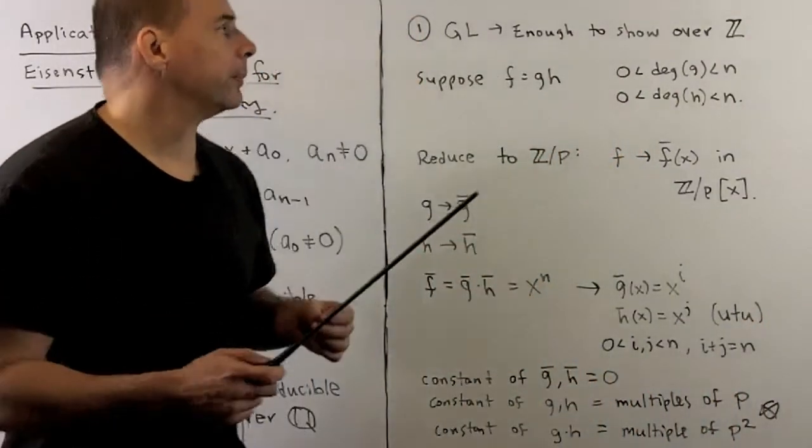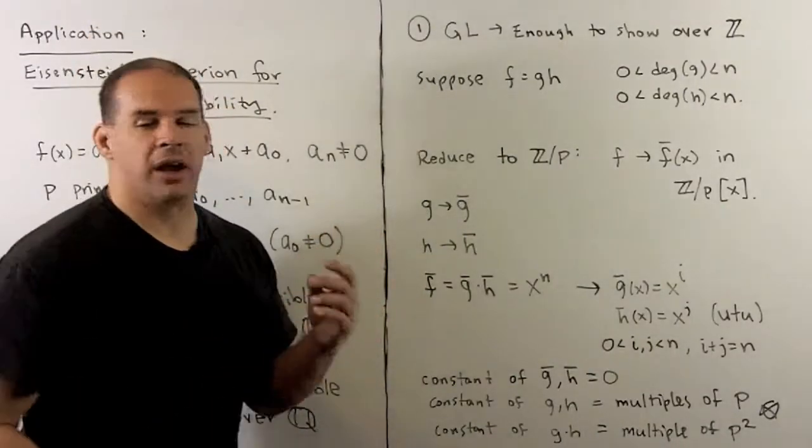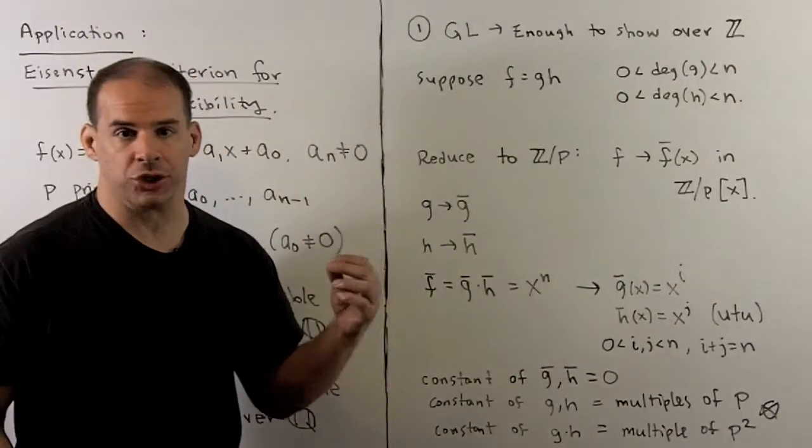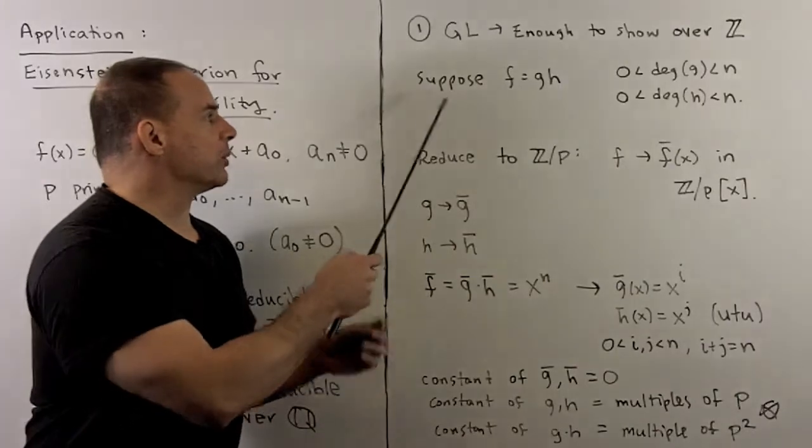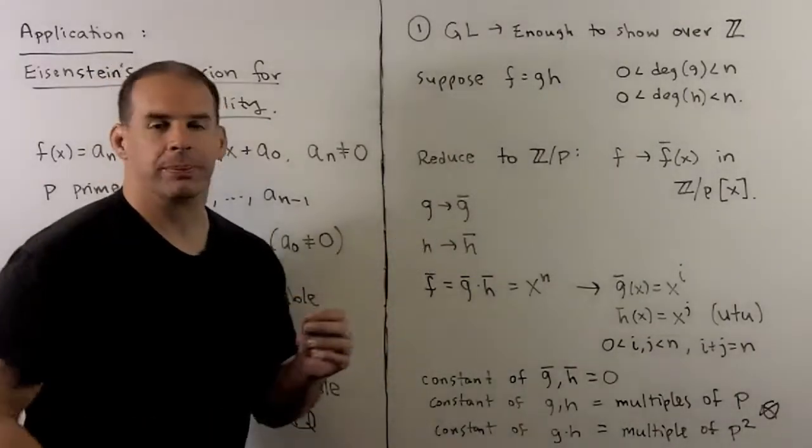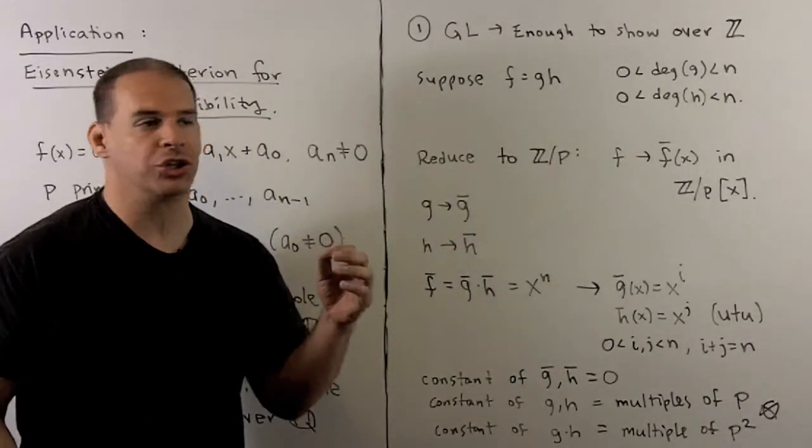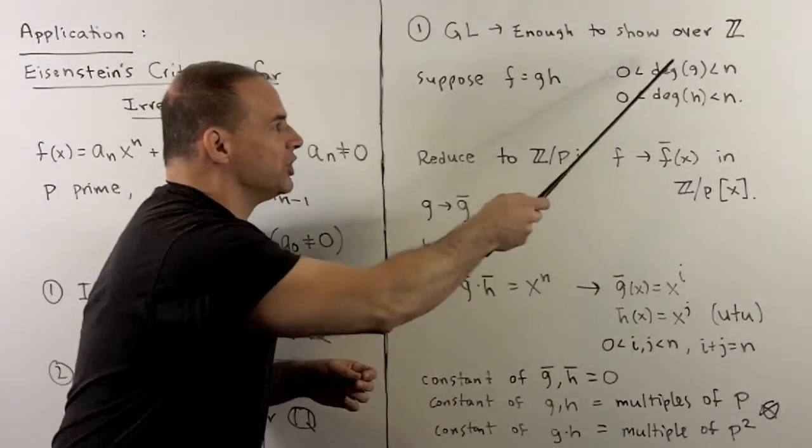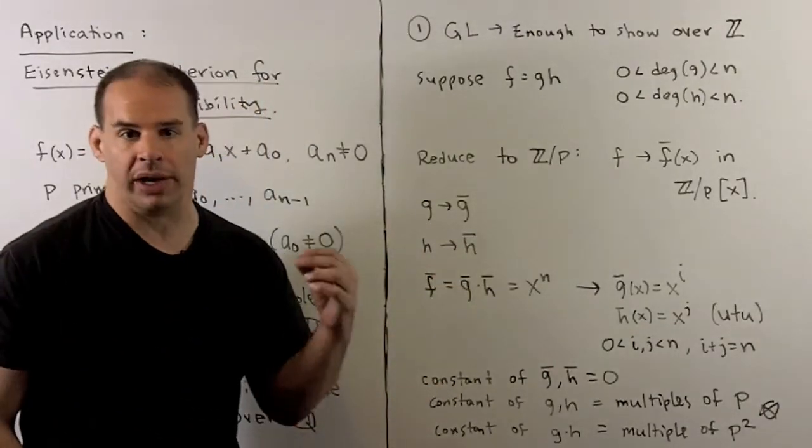Now, to see 1, by Gauss's Lemma, it's enough just to show irreducible over the integers. So suppose that we can factor f as g times h, g and h polynomials over the integers, and one of the degrees of g and h are strictly between 0 and n.